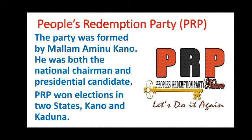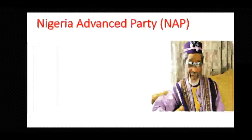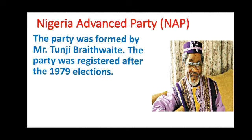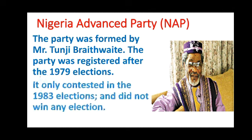Let's look at another political party — the Nigeria Advanced Party, NAP. The Nigeria Advanced Party was founded by Mr. Tunji Braithwaite, and the party was only registered after the 1979 elections, so it didn't participate in 1979. It only participated in the 1983 election, and unfortunately the party didn't win any election at all — it didn't win any state.